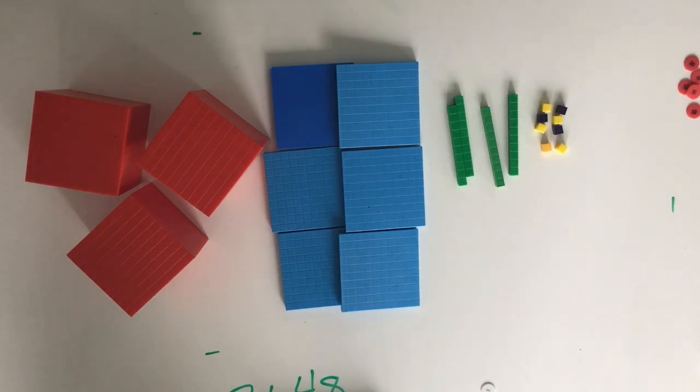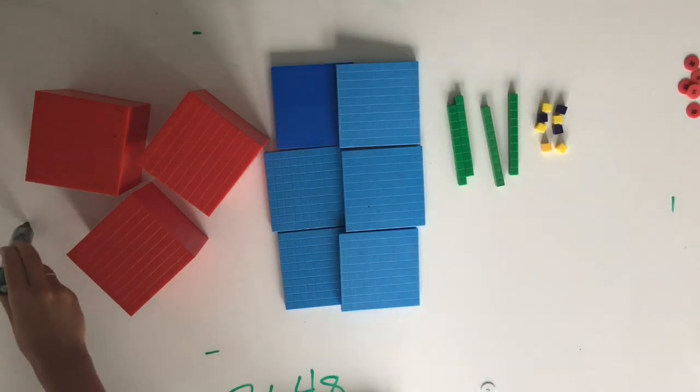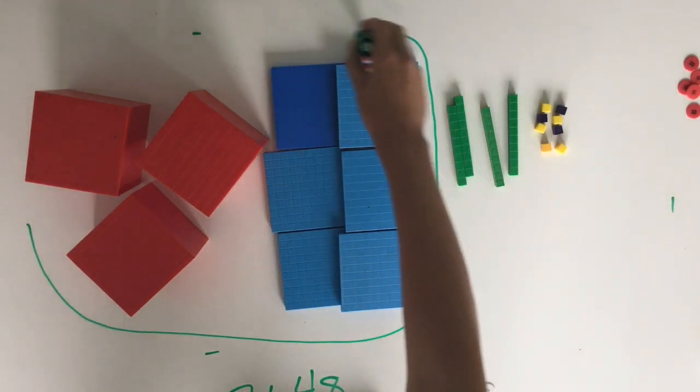Because we're rounding to the nearest thousands, we're having a look just at the numbers in the thousands and the hundreds place.